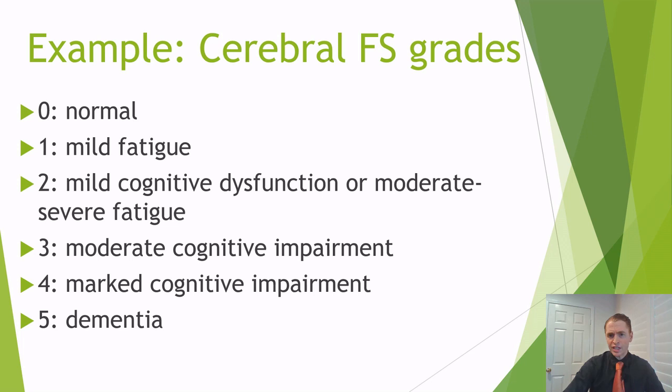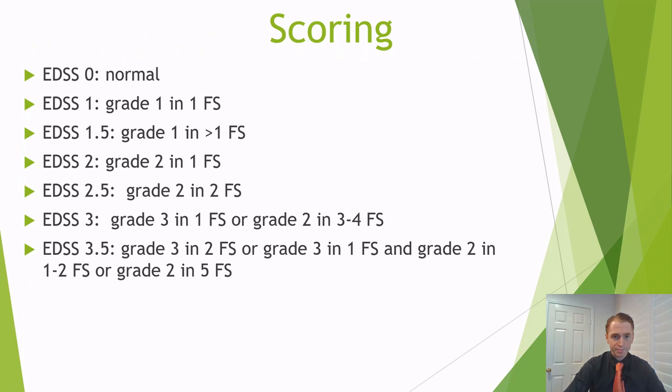To give one other example, these are the cerebral functional system grades. Grade 0 would be normal. Grade 1 would be mild fatigue. Grade 2 would be mild cognitive dysfunction or moderate to severe fatigue. Grade 3 would be moderate cognitive impairment. Grade 4 would be marked cognitive impairment. And grade 5 would be dementia. There are definitions of each of these categories, but I won't go into too much detail.